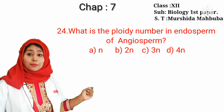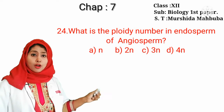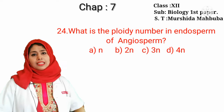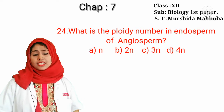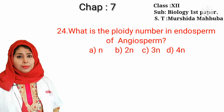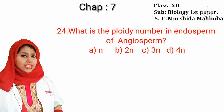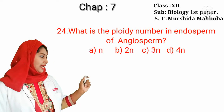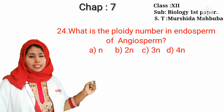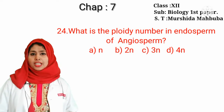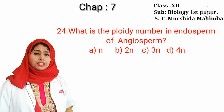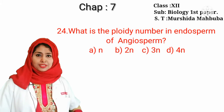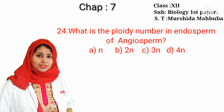What is the ploidy number of endosperm in angiosperm? The correct answer is triploid (3n), because endosperm is formed after fertilization by the union of the secondary nucleus with the male gamete.